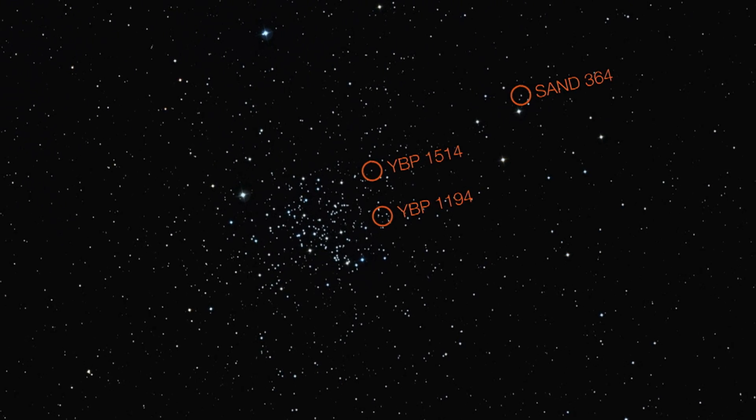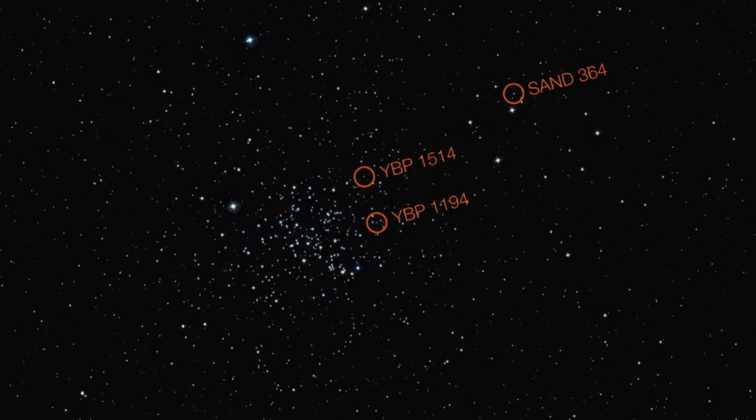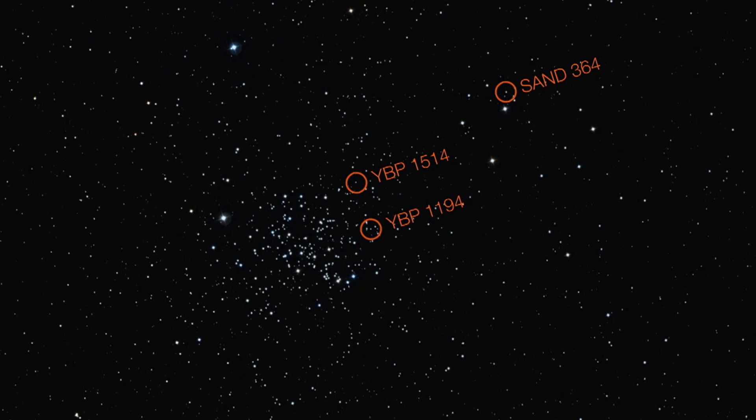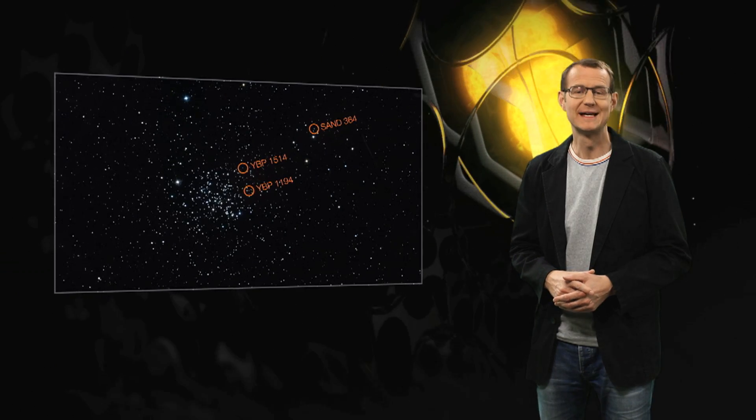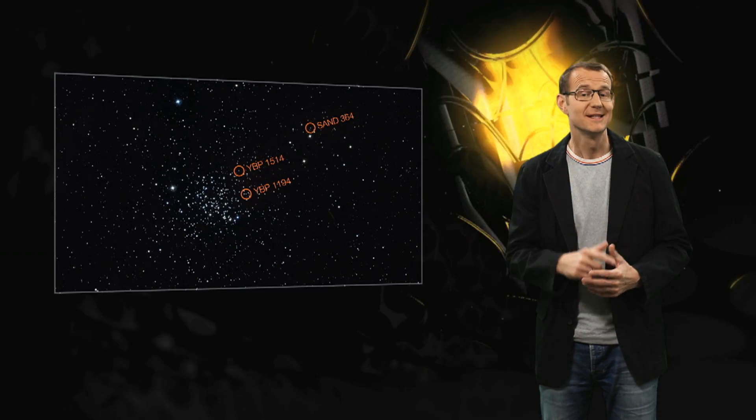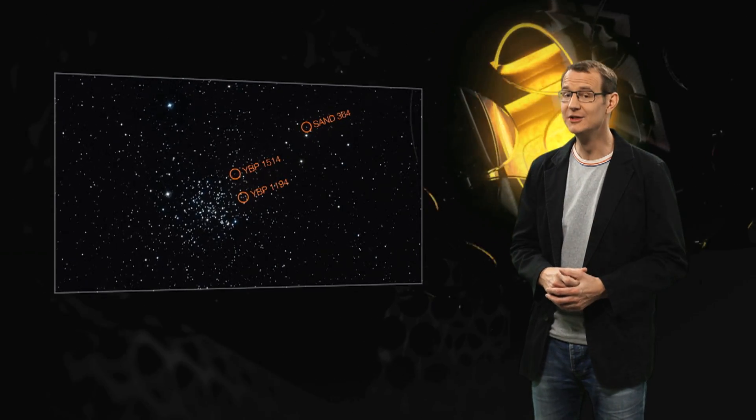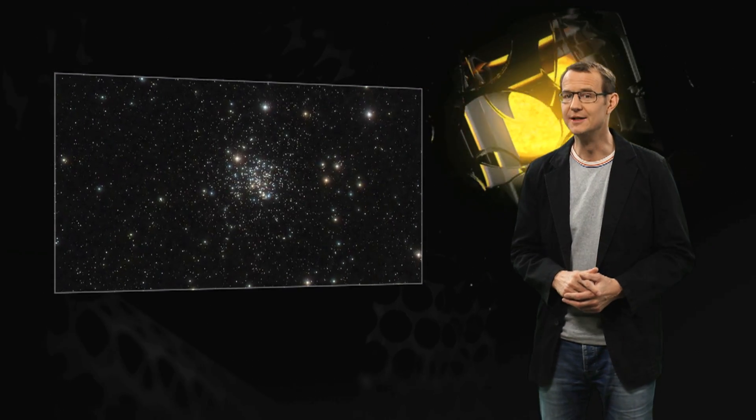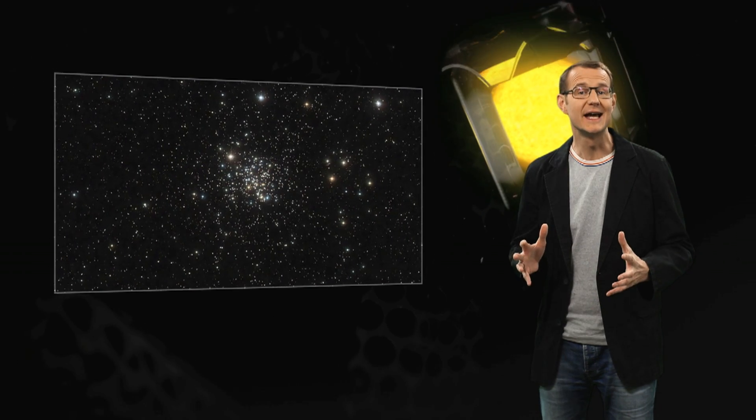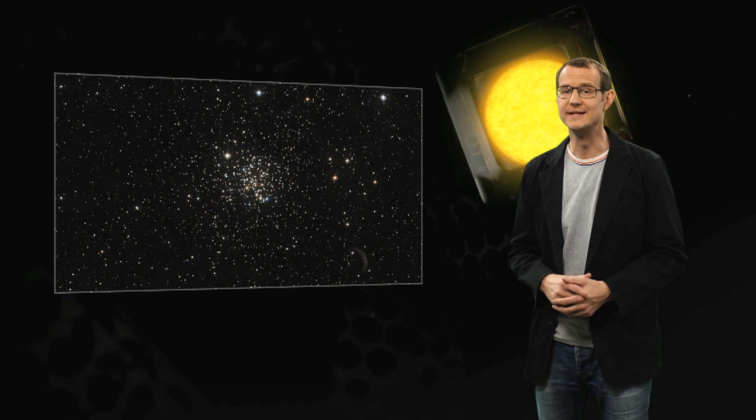Three brand new exoplanets have been discovered. Considering that we already know about a thousand exoplanets, that might not sound like much. But this finding is in fact a little unusual, because these three planets orbit stars inside a cluster of stars known as Messier 67.